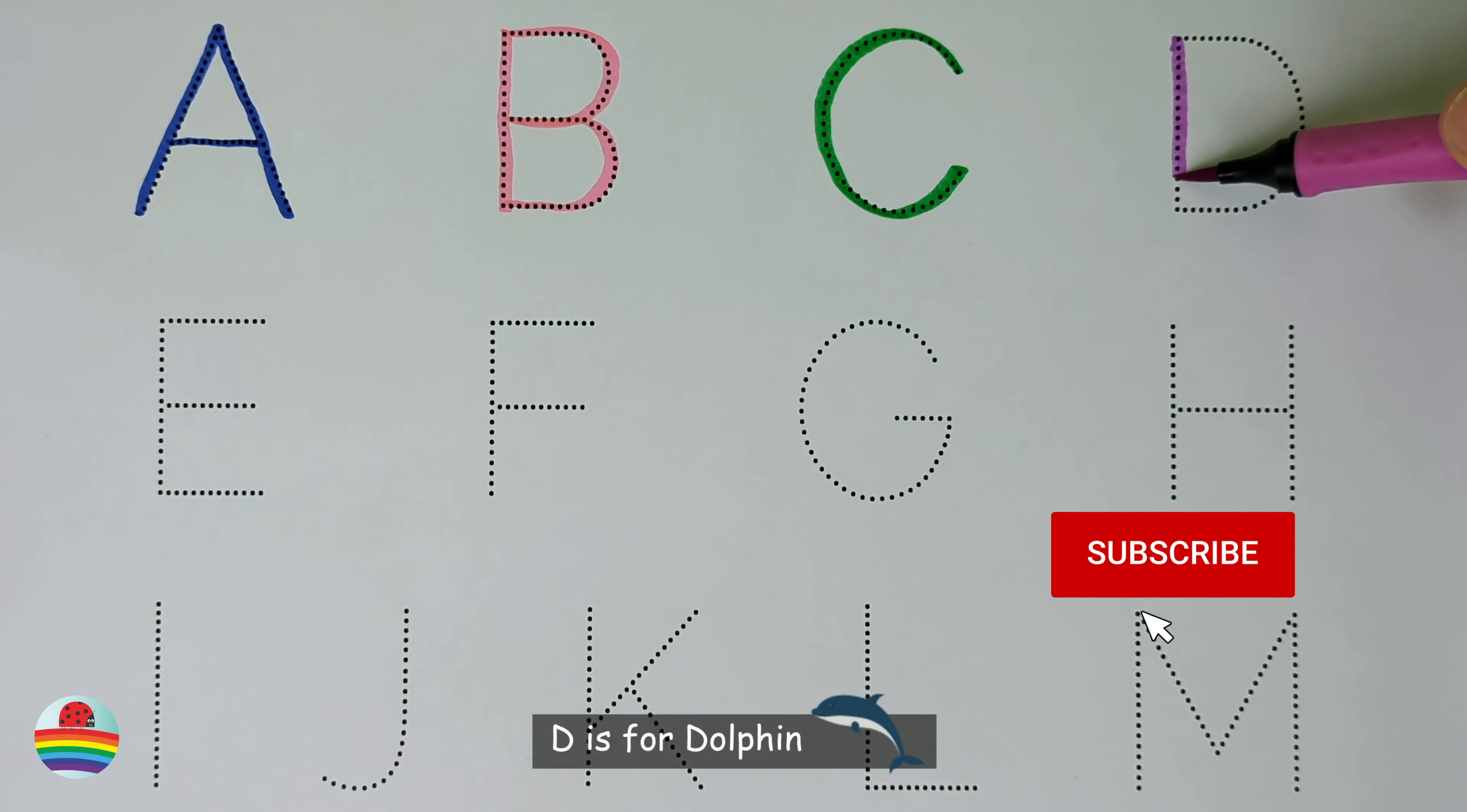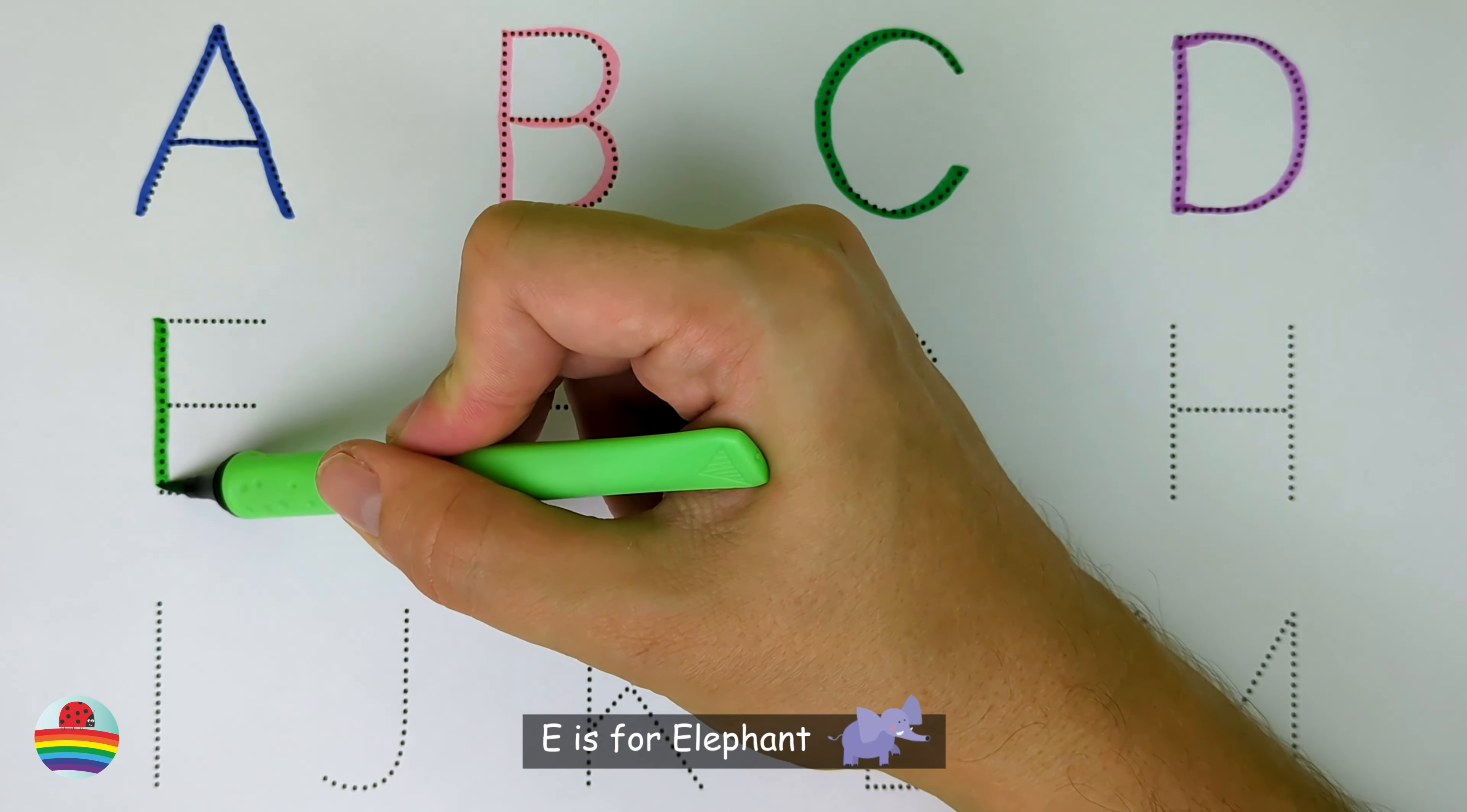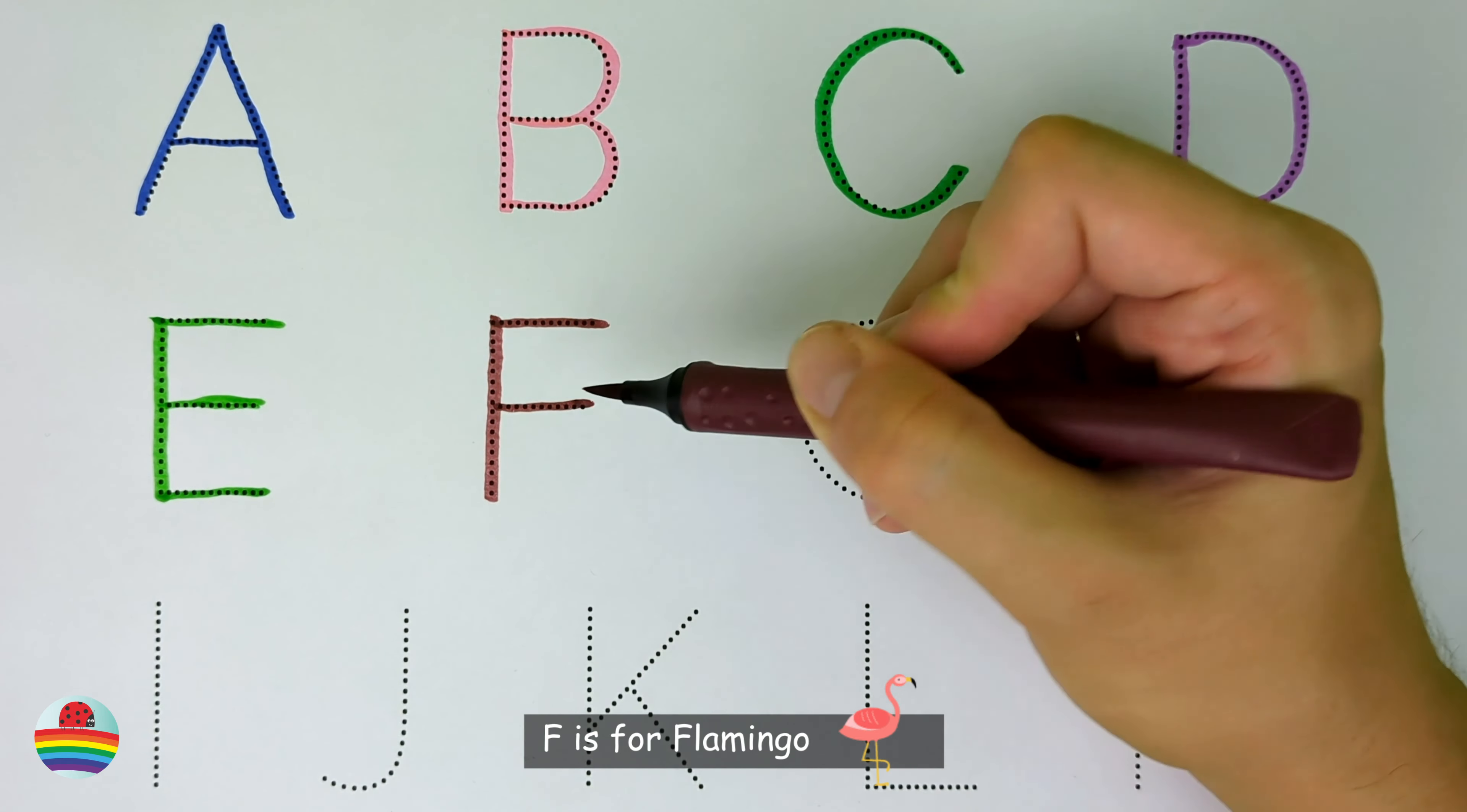D. D is for dolphin. D. E. E is for elephant. E. F. F is for flamingo. F.